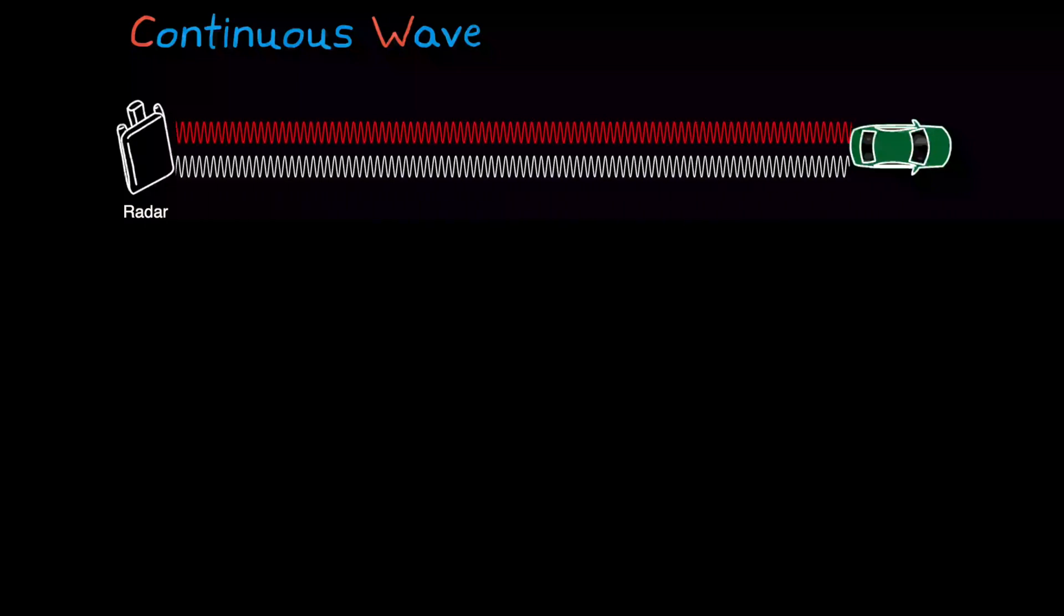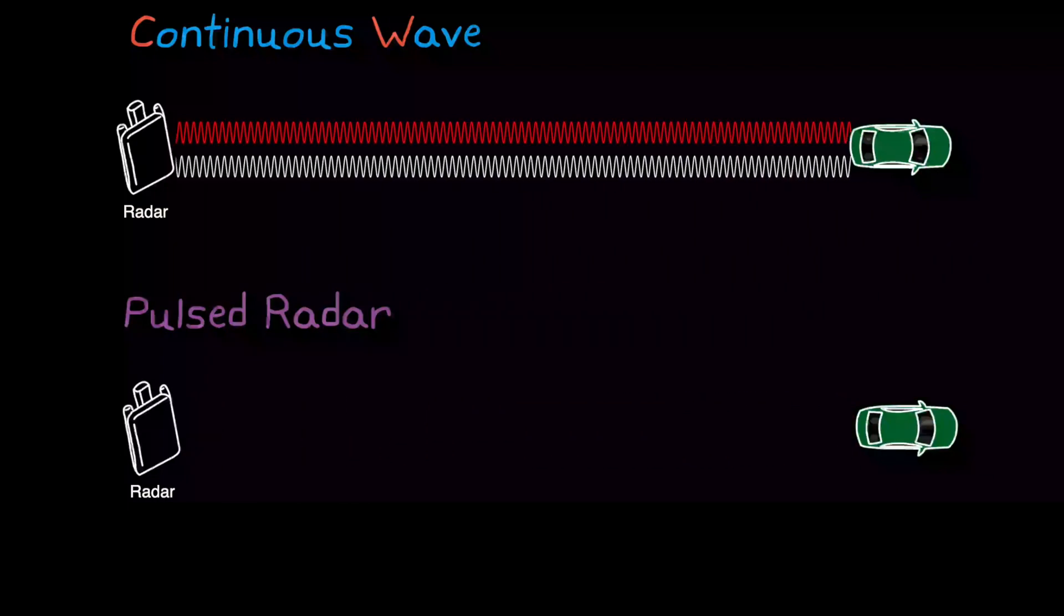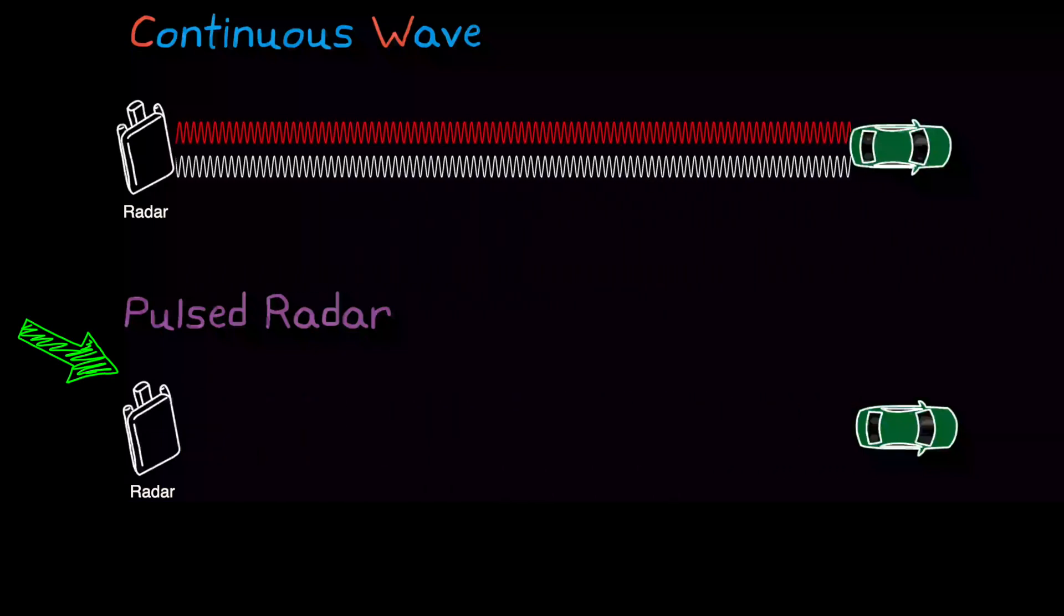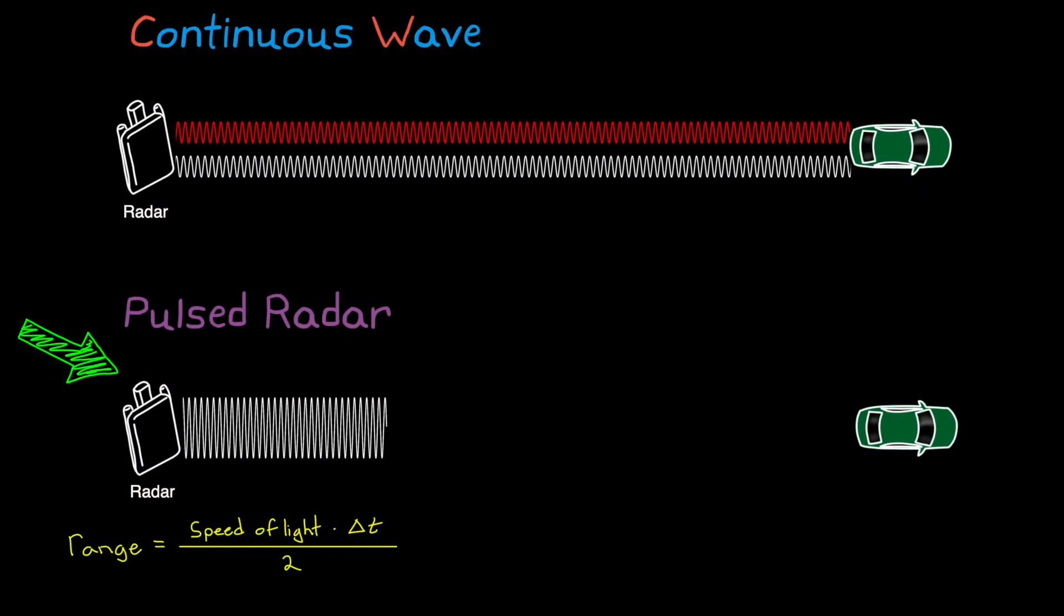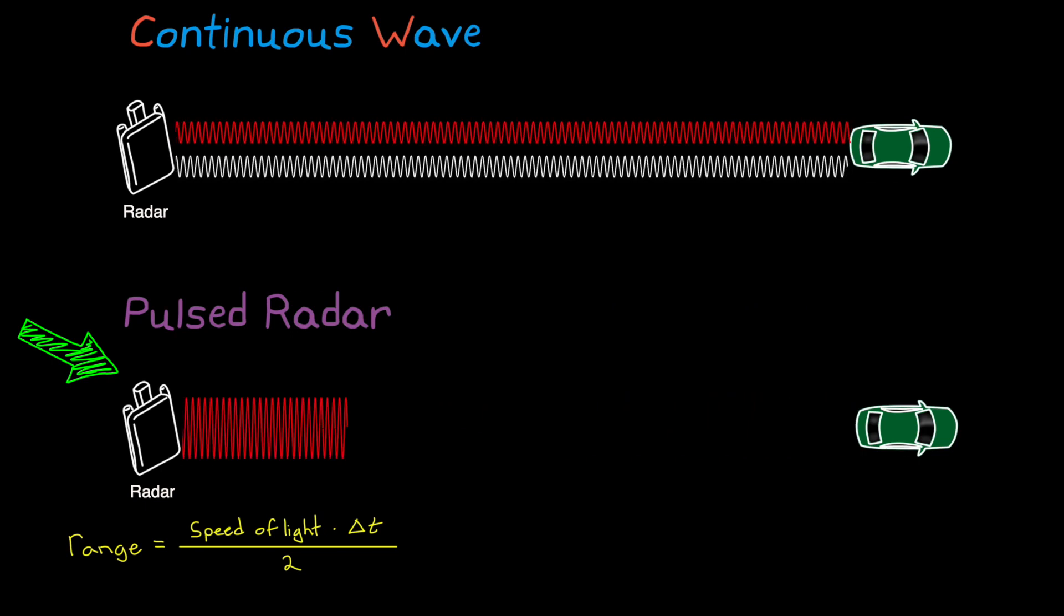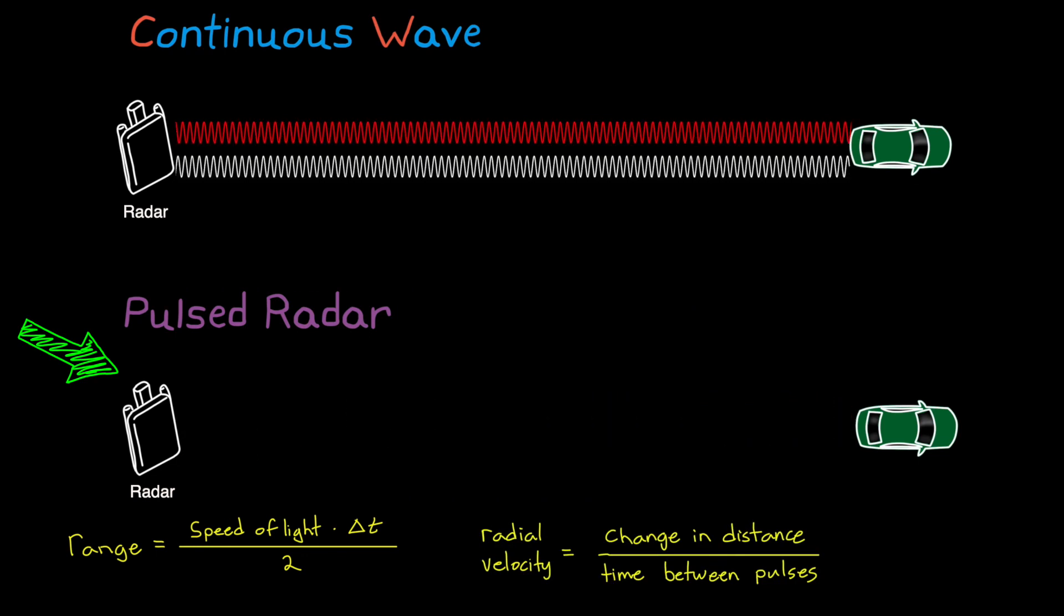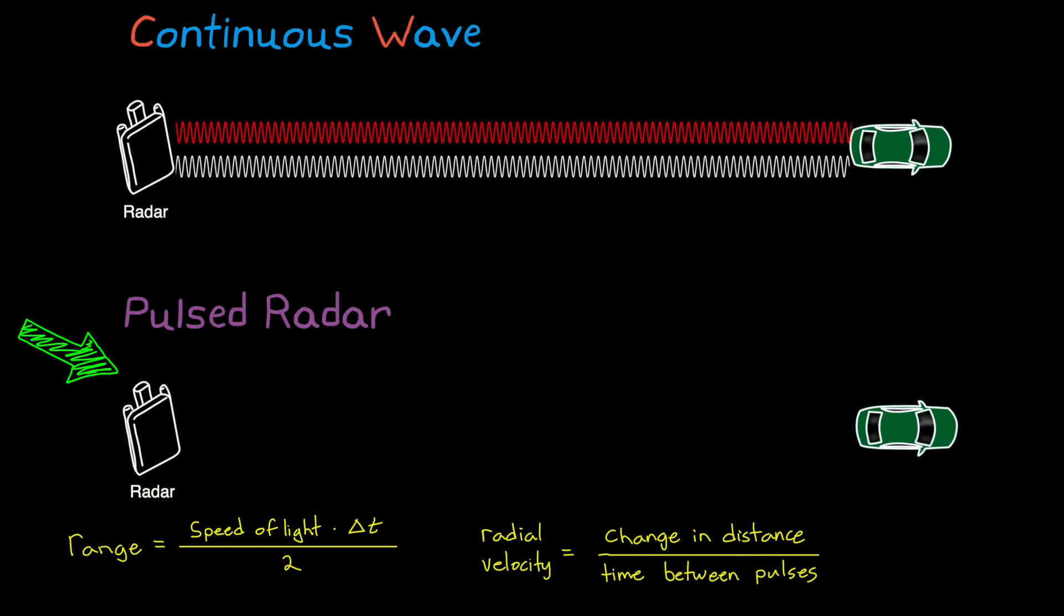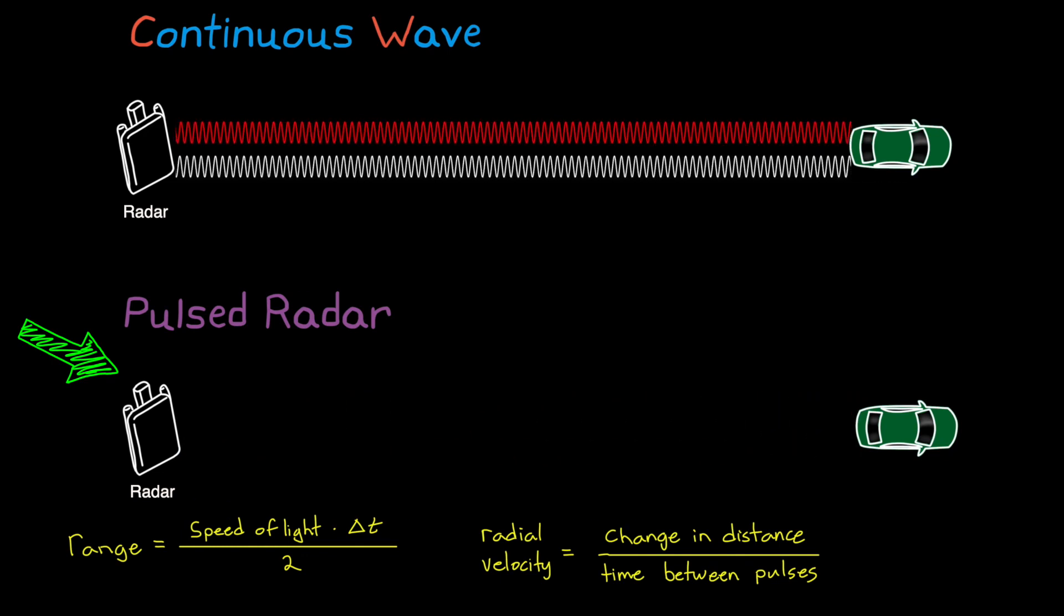This is in contrast to pulsed radar, where short duration but high energy pulses are emitted in series. With pulsed radar in its simplest form, determining range and radial velocity is relatively intuitive. We can determine the distance to an object by timing how long it takes the pulse to travel the round trip, multiply it by the speed of light, and divide by two to get the one-way distance. We can measure radial velocity by looking at the change in distance between two successive pulses.